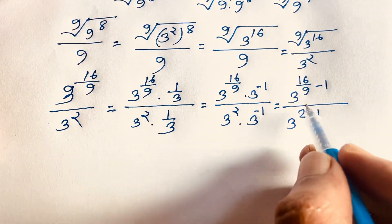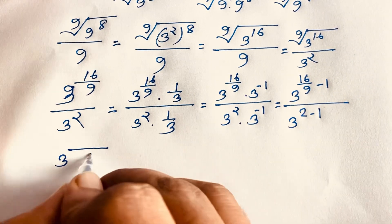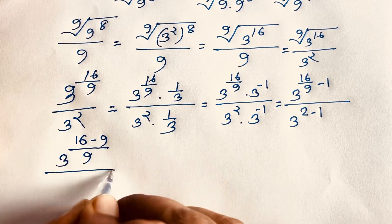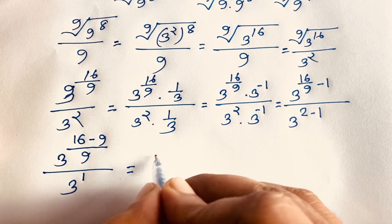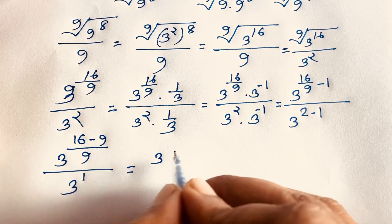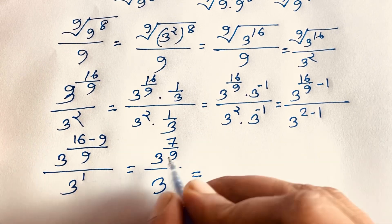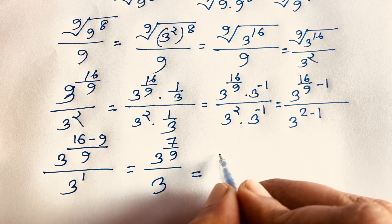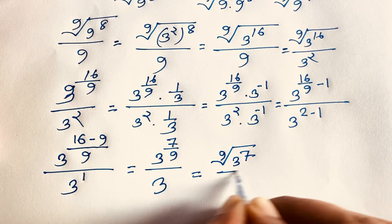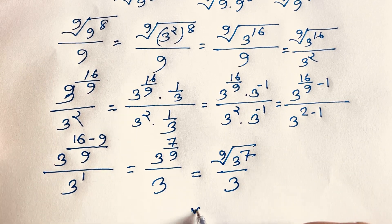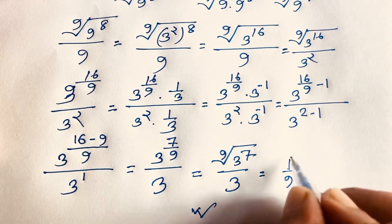This value is 3 to the power — the least common value is 9 — so it becomes (16 − 9)/9 over 3 to the power 1. And 2 minus 1 equals 1. So 16 minus 9 equals 7, giving us 3 to the power 7/9, over 3. This can be written as the 9th root of 3 to the power 7, over 3. This is our final answer.